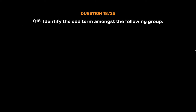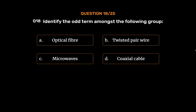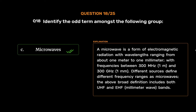Question No. 18. Identify the odd term amongst the following group: Option A. Optical fiber. Option B. Twisted pair wire. Option C. Microwaves. Option D. Coaxial cable. The correct answer is Option C, Microwaves. A microwave is a form of electromagnetic radiation with wavelengths ranging from about 1 meter to 1 millimeter, with frequencies between 300 megahertz and 300 gigahertz. Different sources define different frequency ranges as microwaves. The above broad definition includes both UHF and EHF millimeter wave bands.